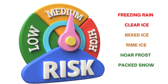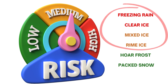Severity-wise, the most dangerous is freezing rain, followed by clear ice, then mixed ice, rime ice, hoar frost, and the last being packed snow. The first four are encountered in flight, hoar frost can occur both on ground and in the air, and packed snow occurs on ground only.